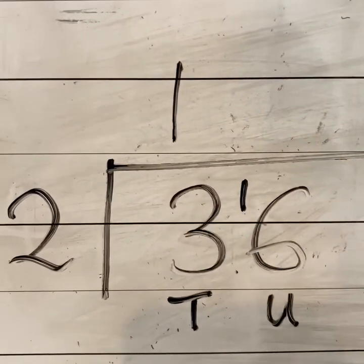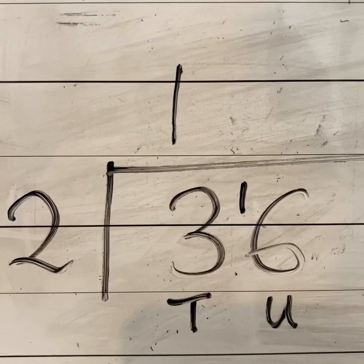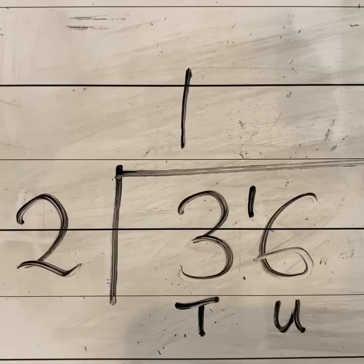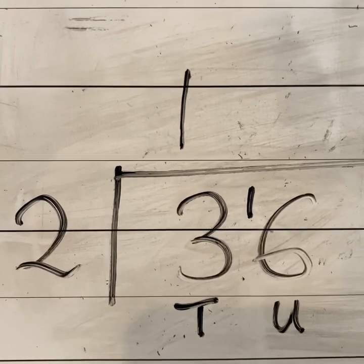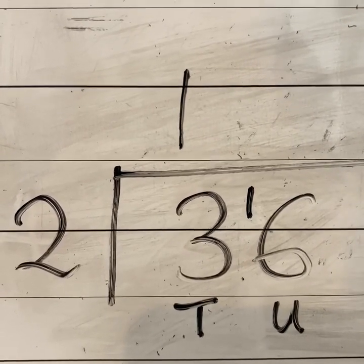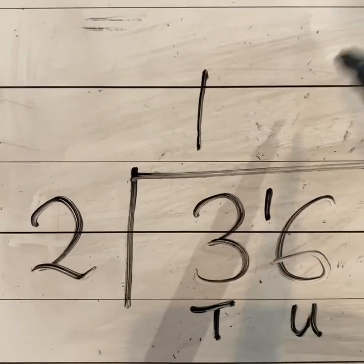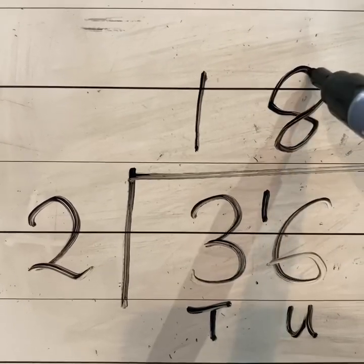So then we count up in 2s again. You've got 2, 4, 6, 8, 10, 12, 14, 16. So it actually goes in 1, 2, 3, 4, 5, 6, 7, 8 times. So we put our 8 up here.